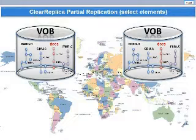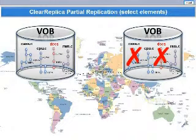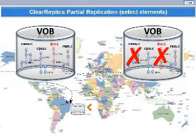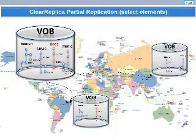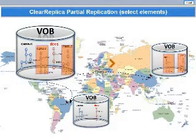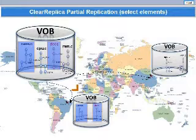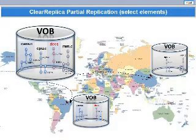But with ClearReplica, all of these options are available to you. Continuing with the previous example, suppose you still wanted to replicate from the U.S. to China, but did not wish to replicate all VOB elements to China — just the CPU and RAM code that the company specializes in. And instead you wanted to send the case code and documentation to your office in Brazil. With ClearReplica, it is possible to send just the CPU and RAM code to China, while sending just the case and documentation code to Brazil.